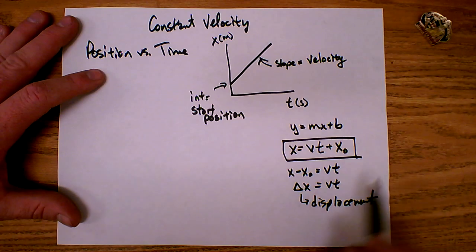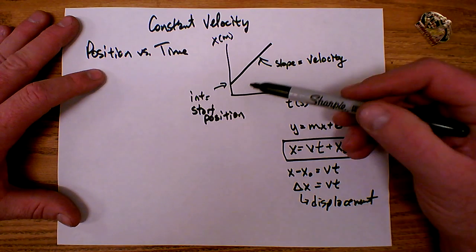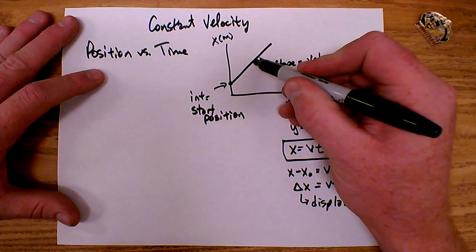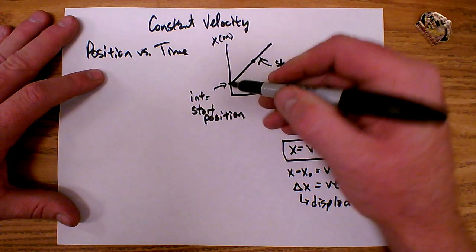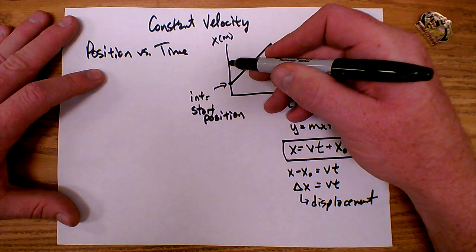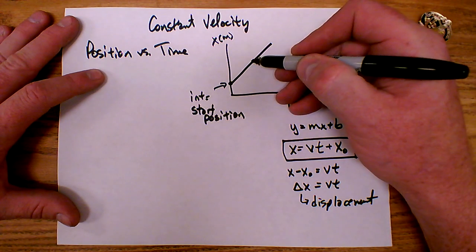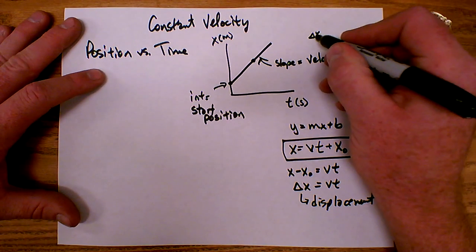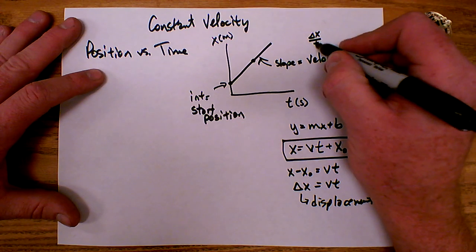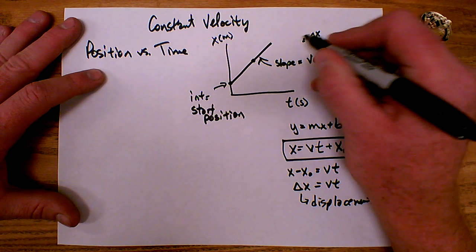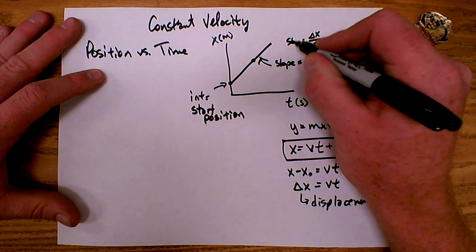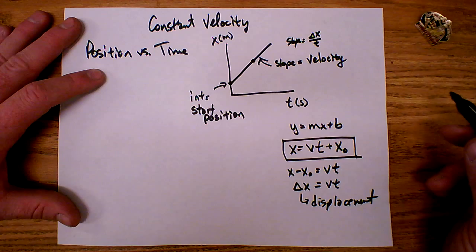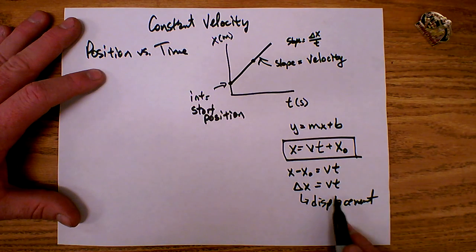Let's look back at our graph. As I look at the slope here, I pick two points and do the rise over run. The rise is how much the position changes, and the run is how much the time changes. So the change in position over the change in time is the slope. That's how we get that the slope of the position-time graph is the velocity.